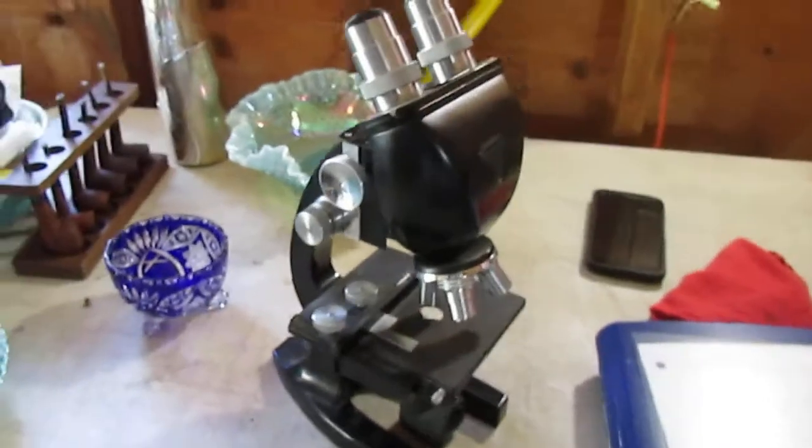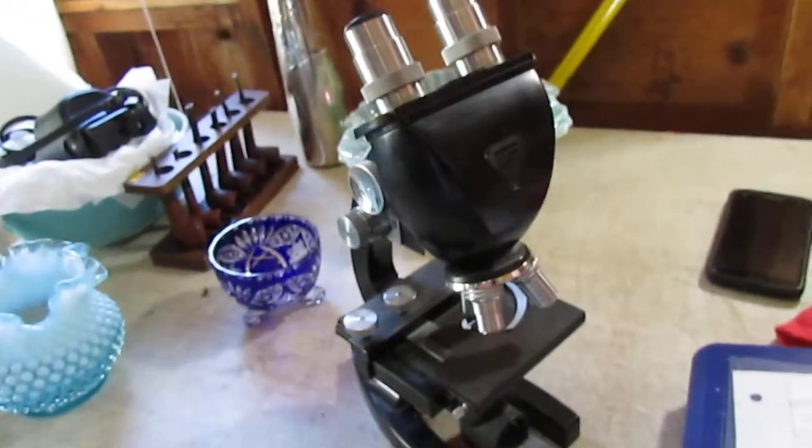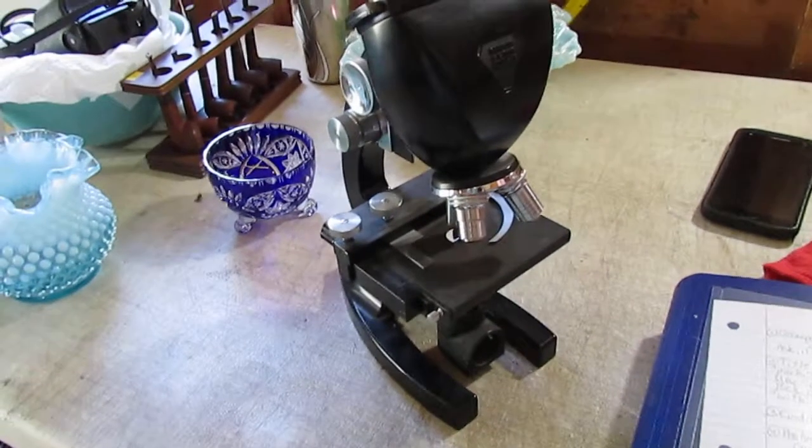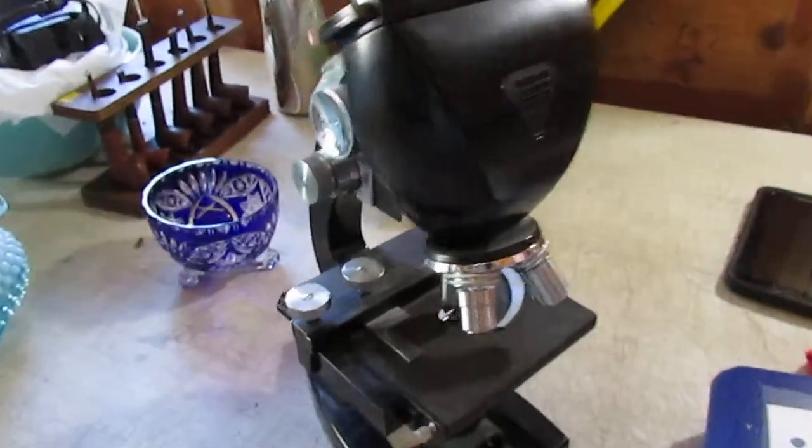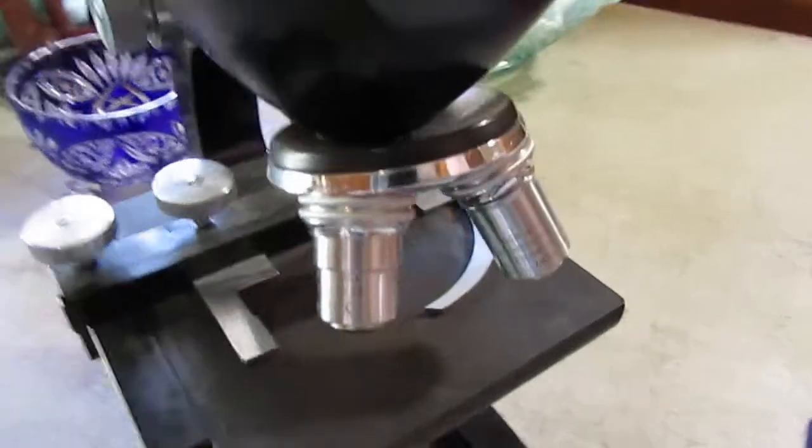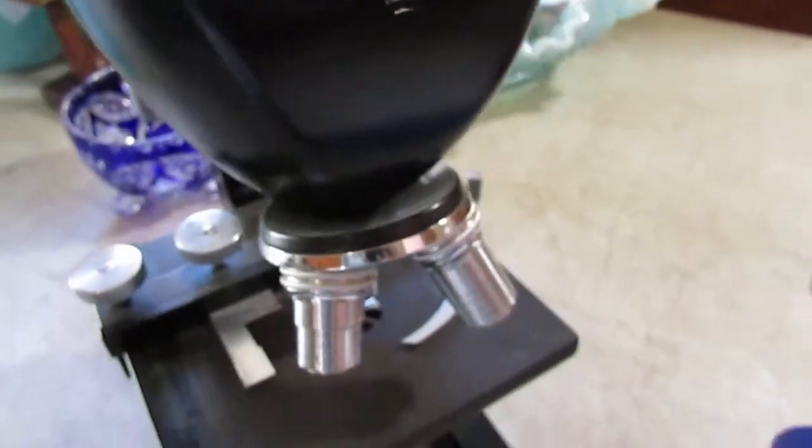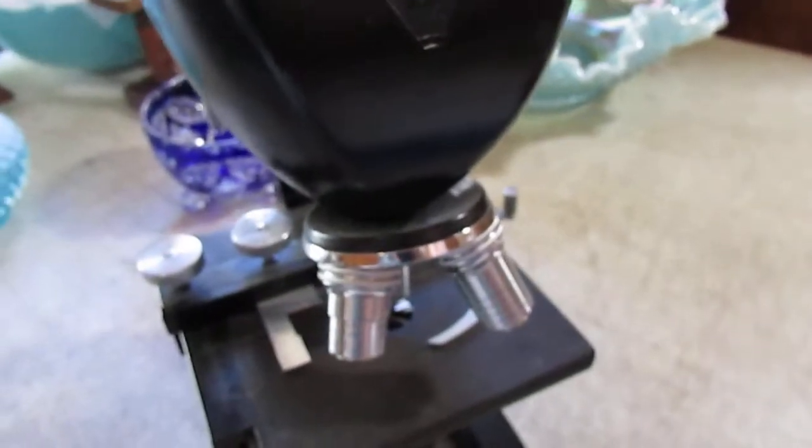In this video we are looking at, I believe, a circa 1940s Bausch & Lomb microscope. And this comes with a 10x, a 43x, and a 97x lens.